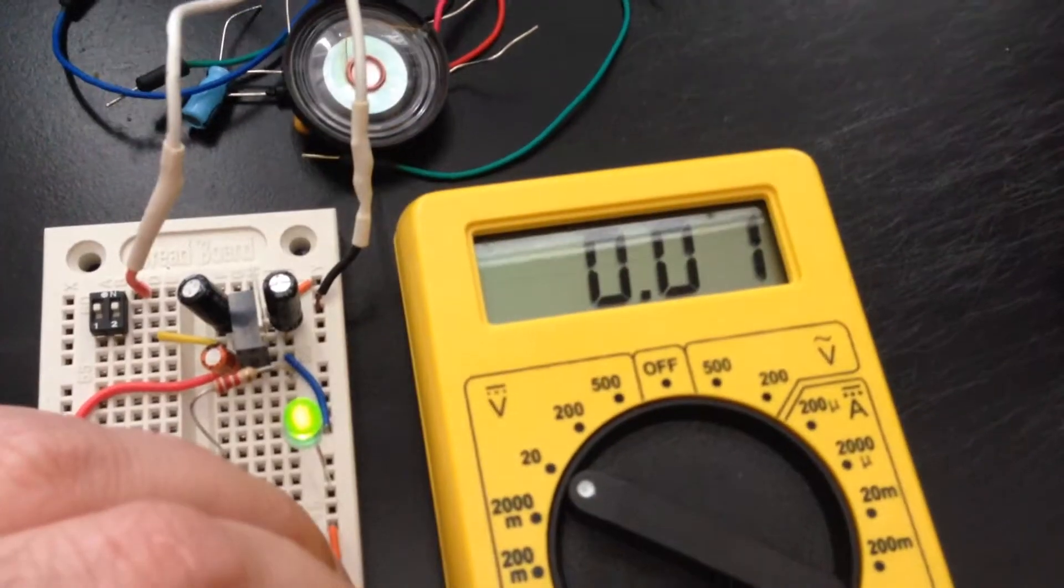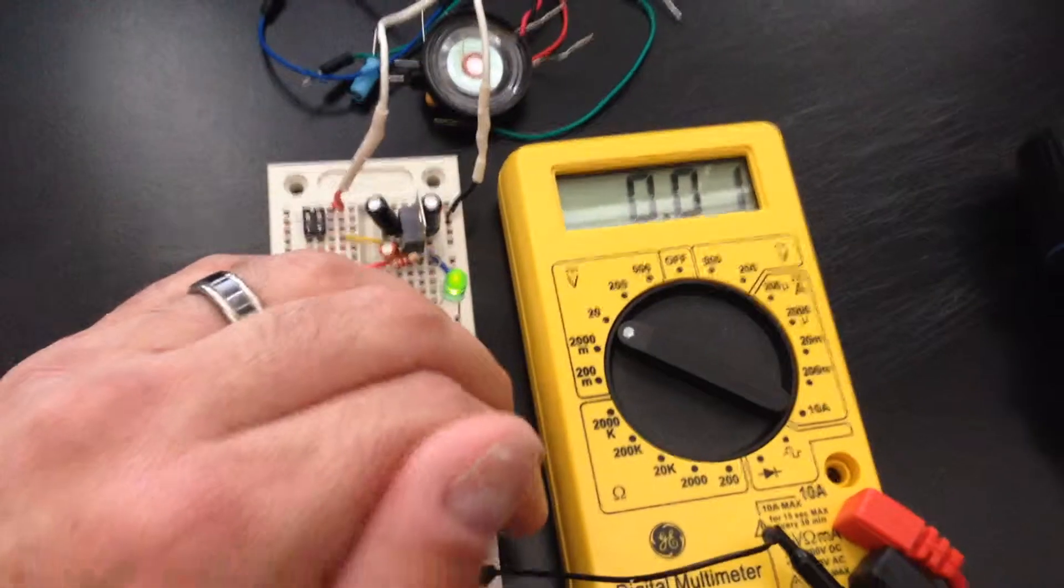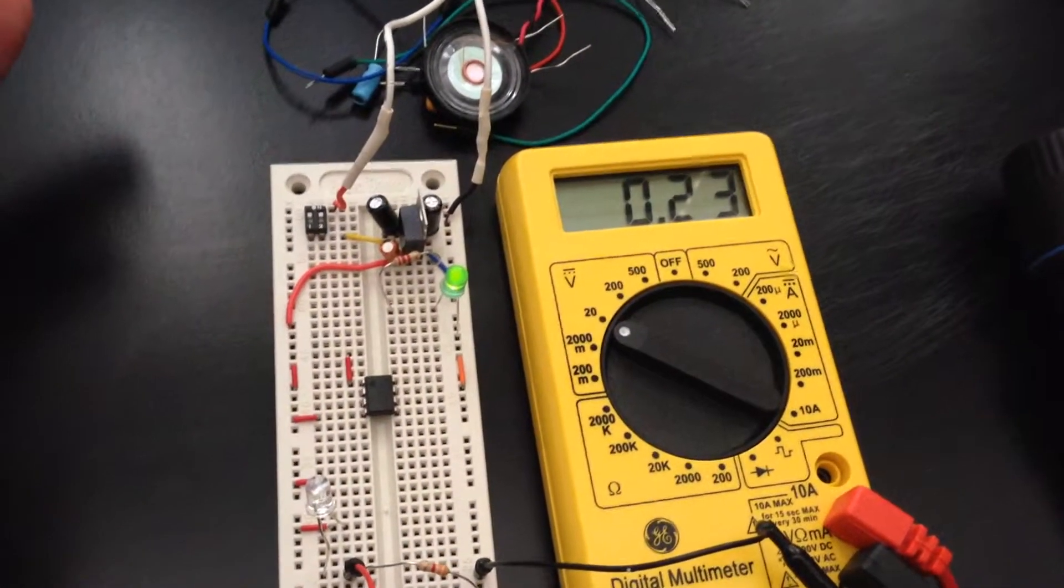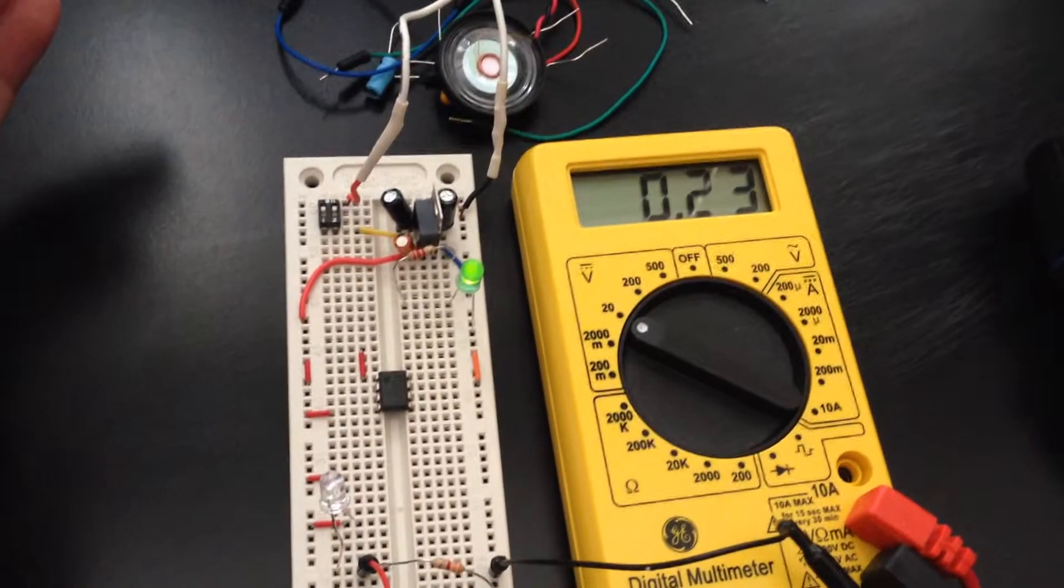Now if I cover it with my hand, you can see it drops really low. Almost no reading. I'm going to pull this back here. So take my hand away. It returns to about 0.23.